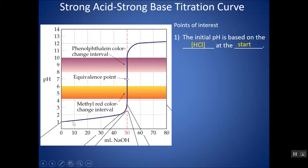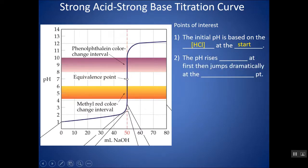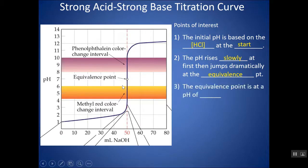As NaOH is added little by little, the pH doesn't change much at first because there's excess acid in the container — whatever base is added immediately gets neutralized by H⁺. As you approach the equivalence point, the pH rises slowly and then jumps dramatically; a single drop of acid or base could substantially shift the pH at that point. The pH at the equivalence point is 7 for a strong acid, strong base titration because the salt produced has negligible acid-base behavior — it's a neutral salt.